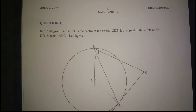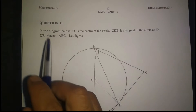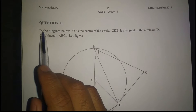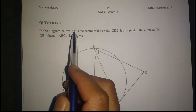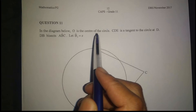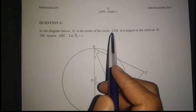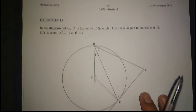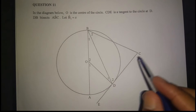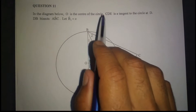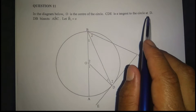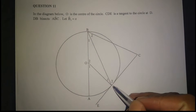Alright, now question 11 — Euclidean geometry. In the diagram below, O is the center of the circle. CDE is a tangent to the circle at D.